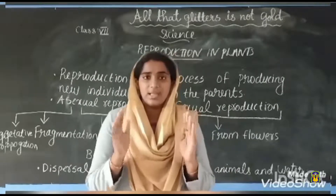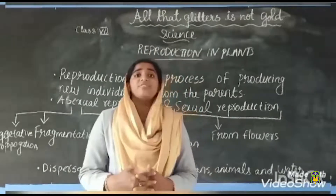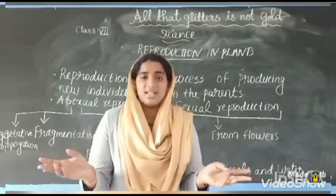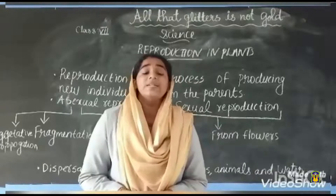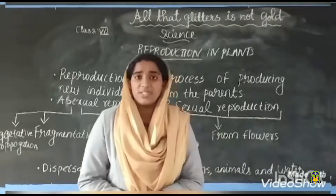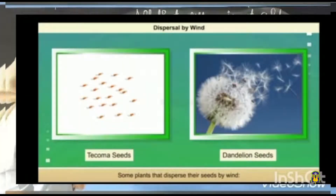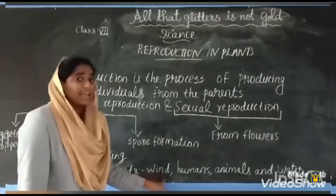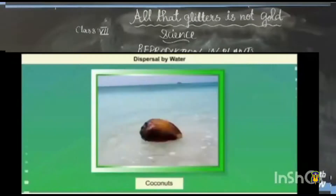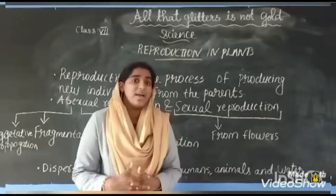Fertilization is the process of fusion of male gametes and female gametes. After that we discussed about dispersal of seeds. Seeds are dispersed into different places and separated from the parent plant — that is called dispersal of seeds. The main agents of dispersal are wind, humans, animals, and water. For example, coconuts are dispersed by water.